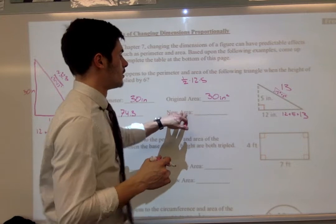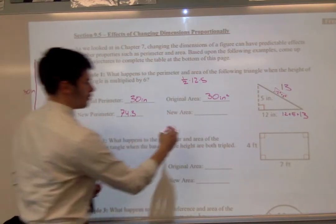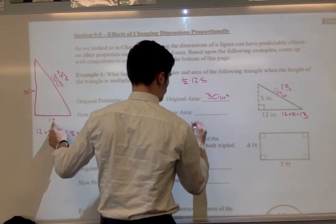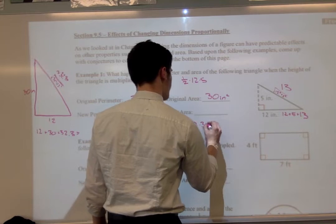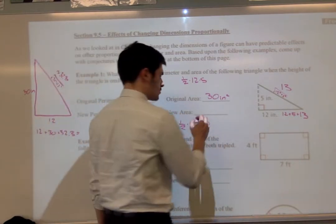In our new area, so let's look back at this triangle. We've got one half times 12 times 30. And so our total here is going to be 180 inches squared.